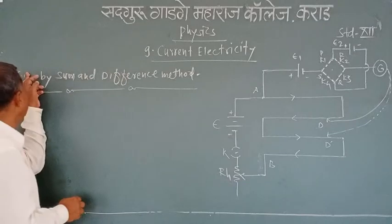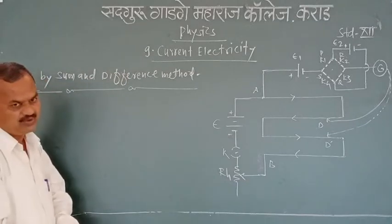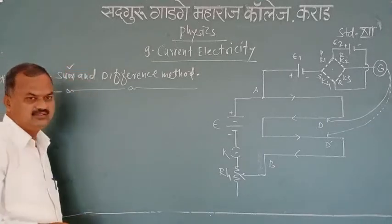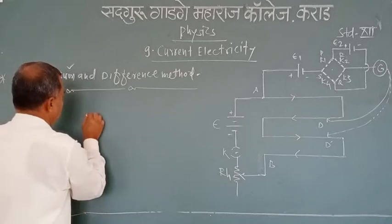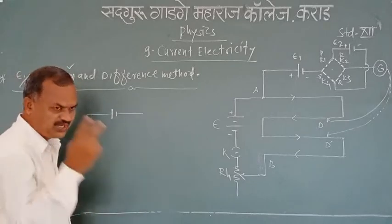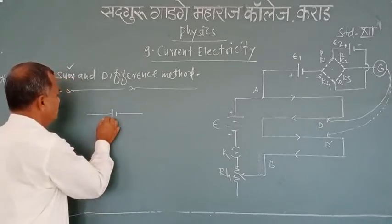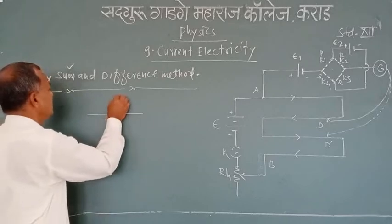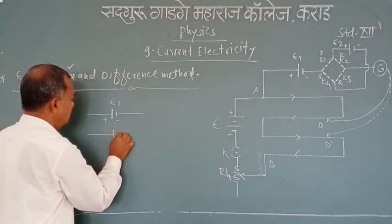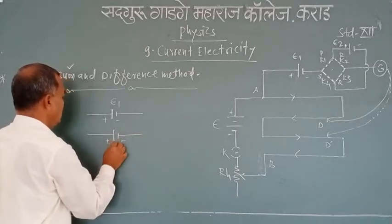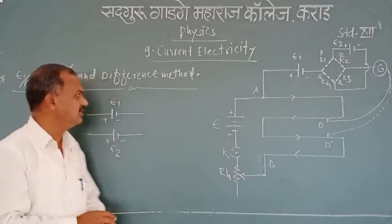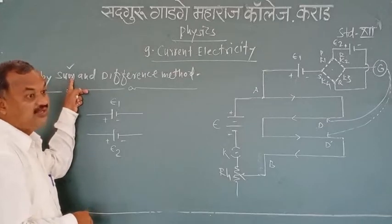Here, E1 is the EMF of the first cell and E2 is the EMF of the second cell. In this method, the word 'sum' indicates that the two cells are connected with the first cell's positive and second cell's negative plates facing outward. This is the first cell having EMF E1, and similarly the second cell having EMF E2 with positive and negative plates.